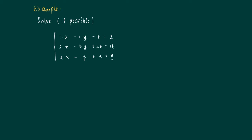We now apply this technique to a new example, trying to solve it if possible by creating as many zeros as possible. We have coefficients x, 3x, and 2x, and we're going to create zeros at the positions of 3x and 2x, sweeping the x's in rows 2 and 3. To get rid of x in row 2, we subtract 3 times row 1 from row 2. To create a zero for x in row 3, we subtract 2 times row 1 from row 3.